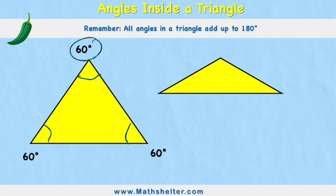If I have 60 plus 60 plus 60, I will equal 180 degrees, and that is the same for every single triangle.